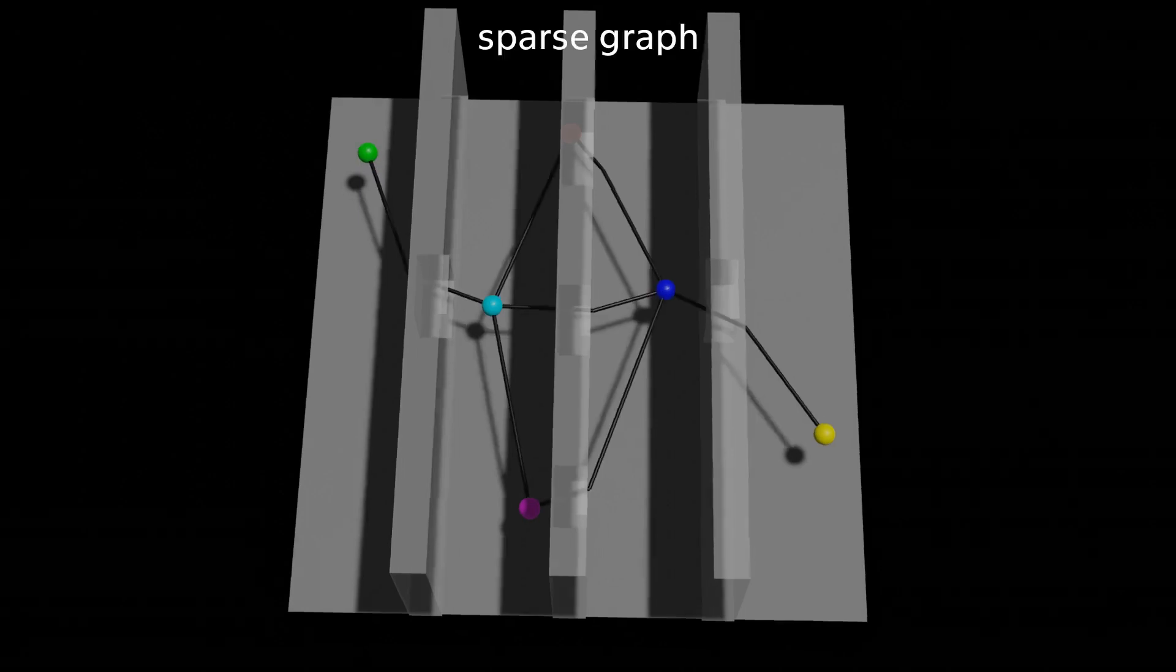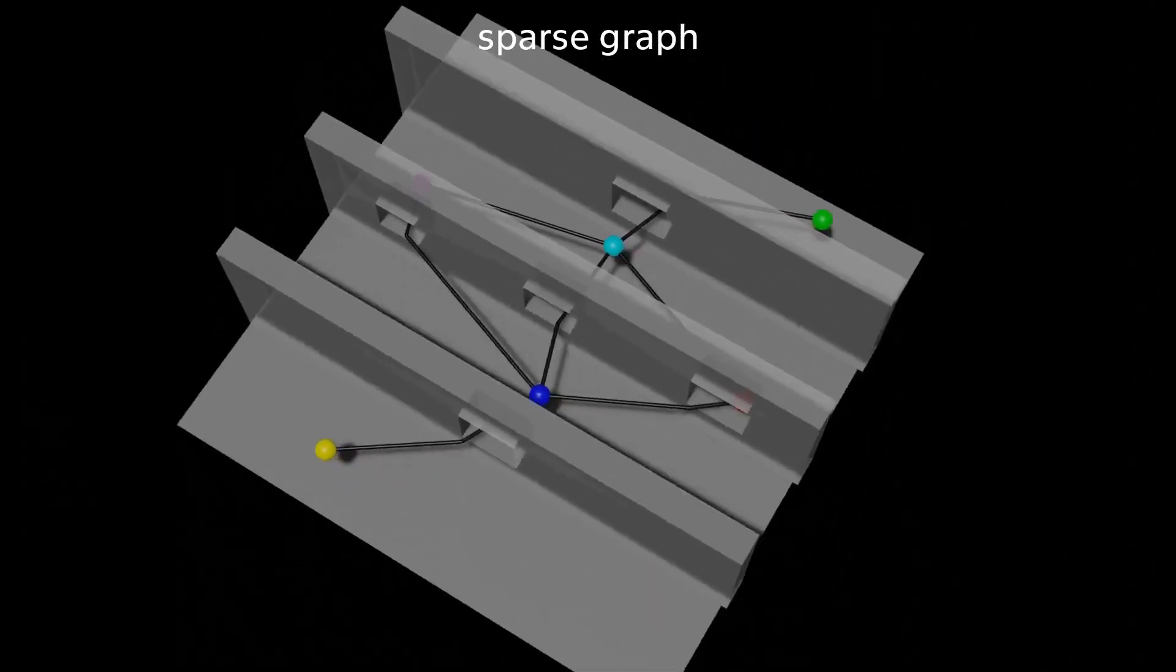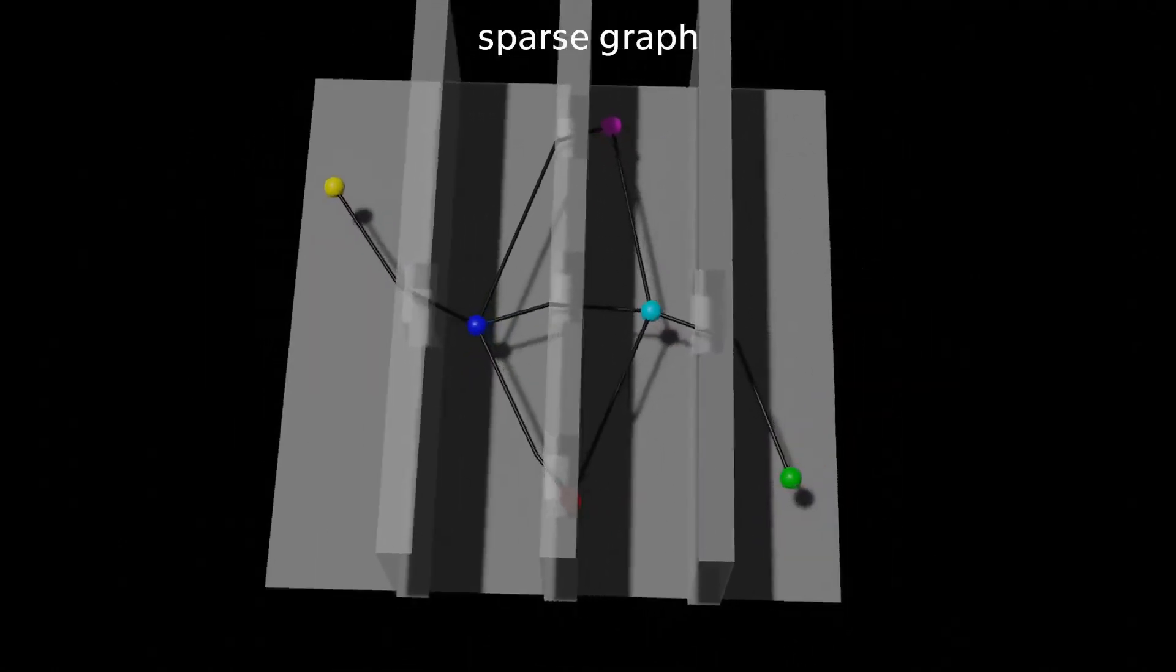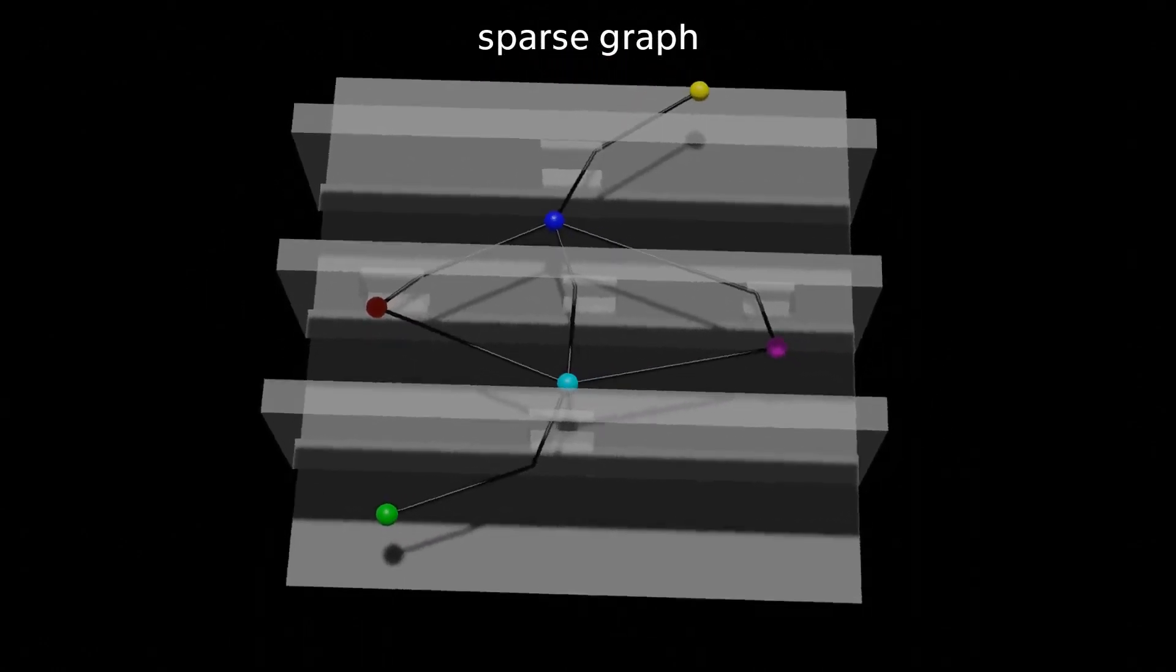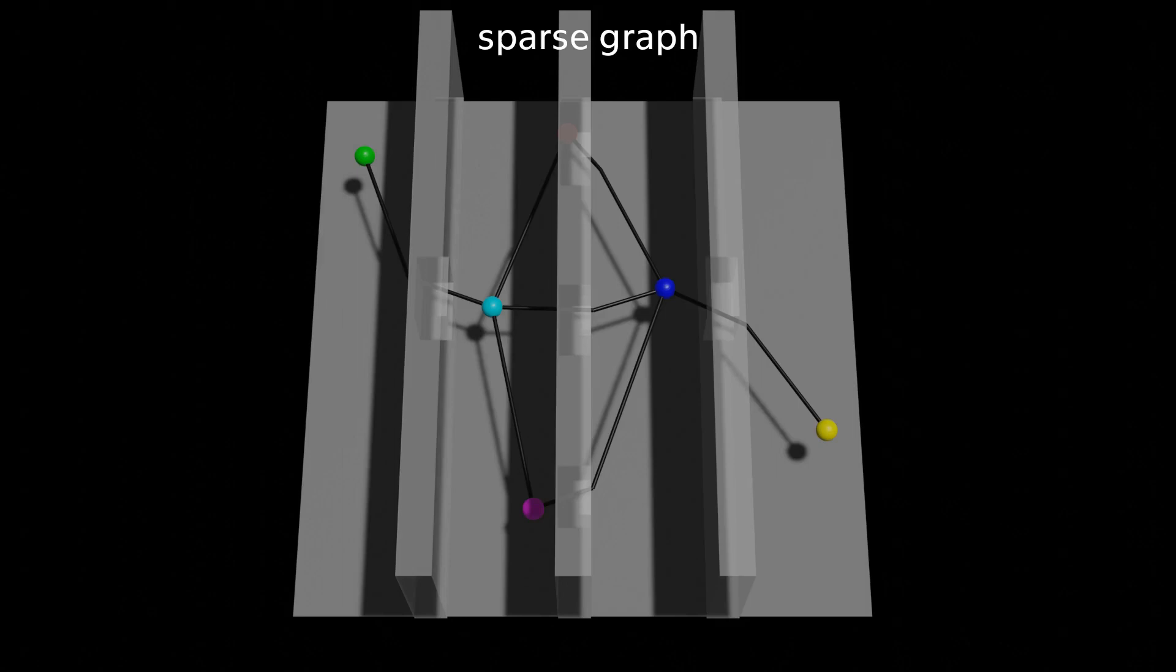This graph is then searched using a depth first search algorithm to find all paths between start and goal configurations. Due to the size of this graph, this process is both much faster and finds less redundant paths than if it was performed on a larger roadmap.